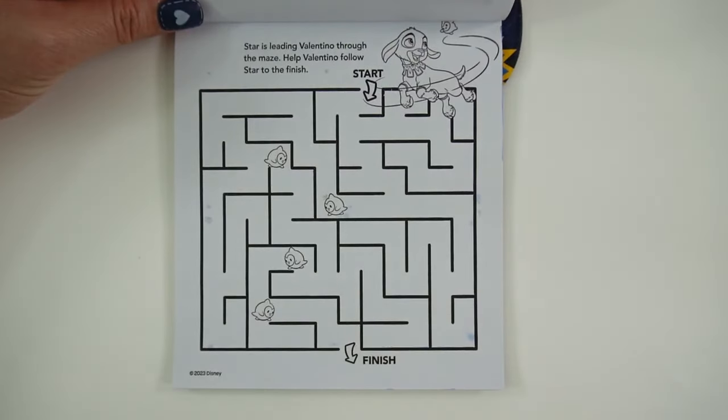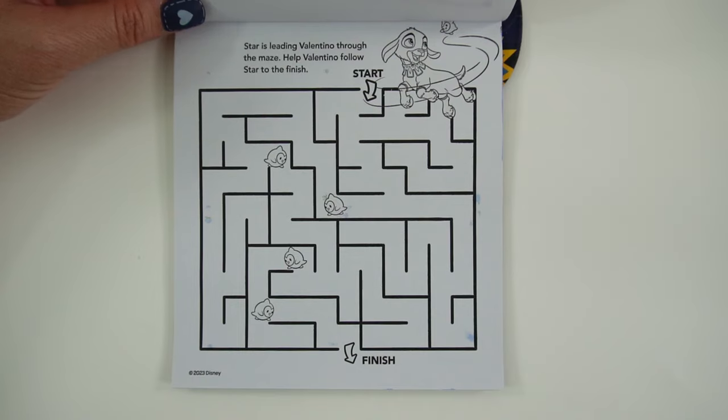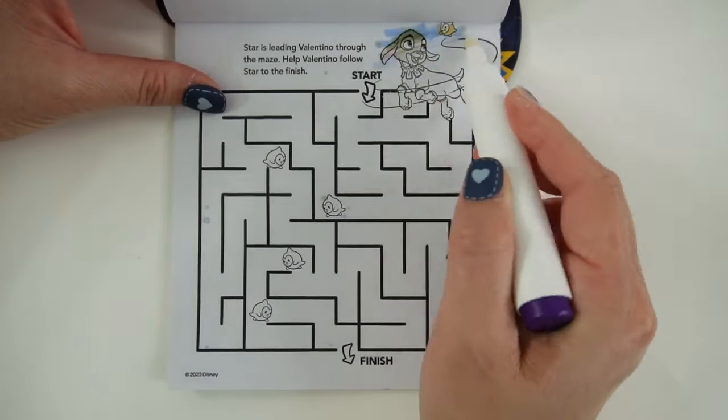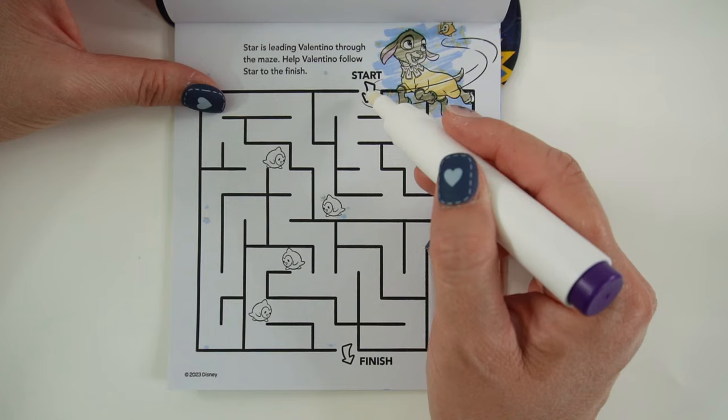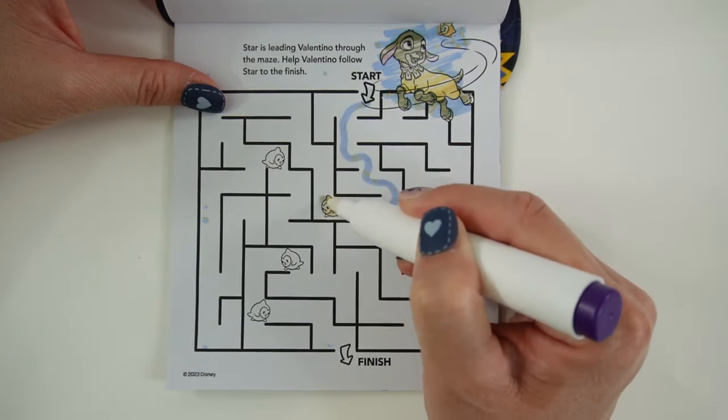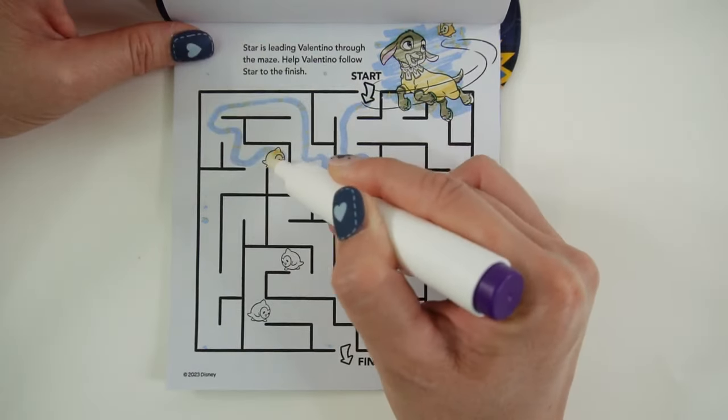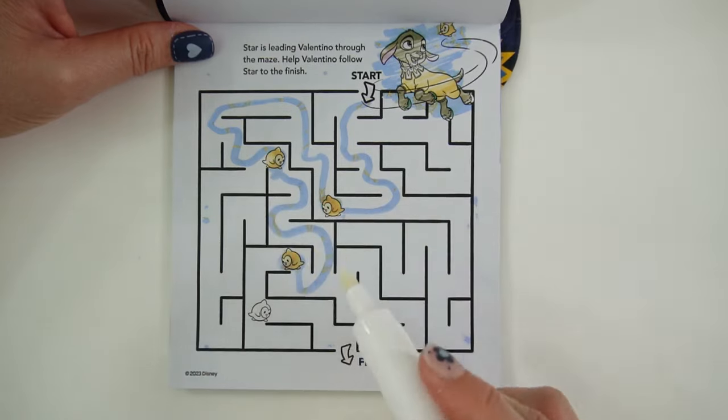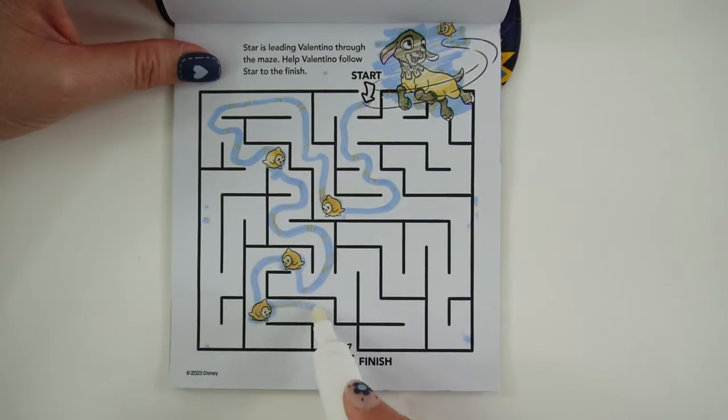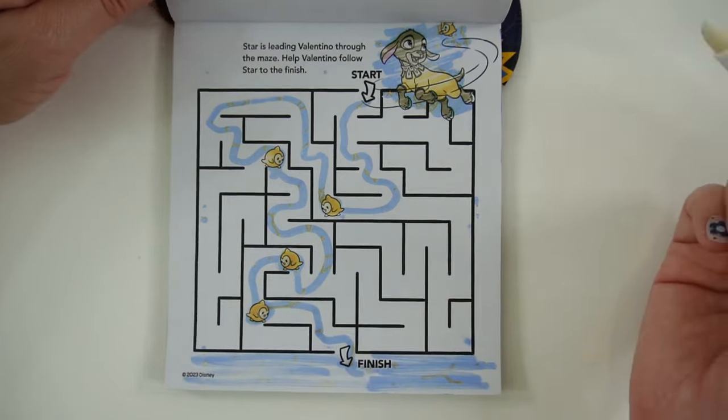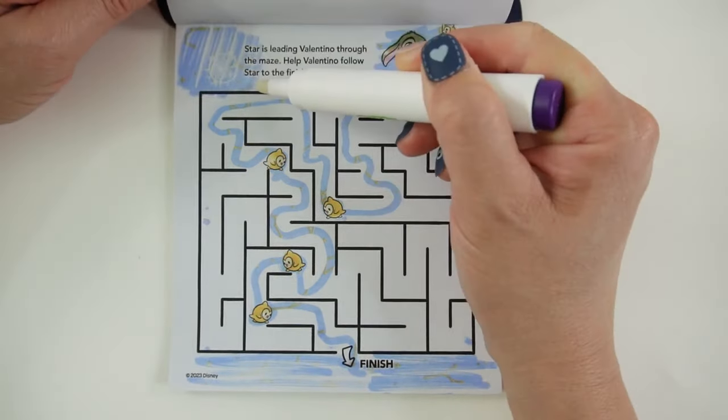Okay, Star is leading Valentino through the maze. Help Valentino follow Star to the finish. Okay, so here is Valentino. Let's start here. Here's Star. Here's Star again. Here's Star. Another one. And we're done. Okay, where's our wish? There it is.